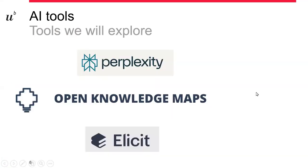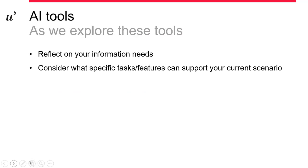The tools that we will explore today are Perplexity AI, Open Knowledge Maps, and Elicit AI. While we're exploring these tools, I want you to consider and reflect on what exactly is your information need, and also consider what specific tasks and features can help support the scenario you are currently in with your topic.